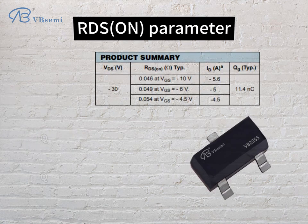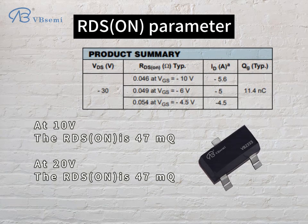RDS(on) parameters: at 10V, the RDS(on) is 47mΩ; at 20V, the RDS(on) is also 47mΩ.